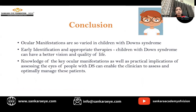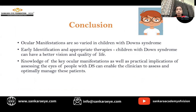To conclude, ocular manifestations are so varied in children with Down syndrome. Early identification and appropriate therapies would help them achieve better vision and quality of life. Knowledge of these ocular manifestations is very important for clinicians dealing with Down syndrome, which will help in optimal management of these patients.